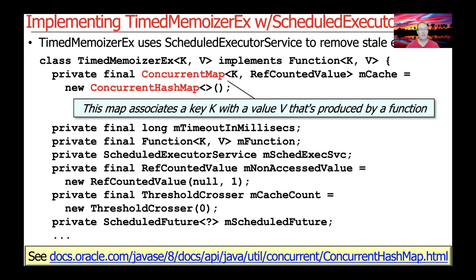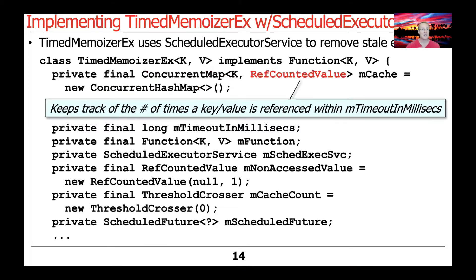Here are the fields. There are a few more fields in this class for reasons we'll cover as we analyze the implementation. As before, we have a ConcurrentHashMap that associates the key with the value, and in this case the value is again a RefCountedValue.